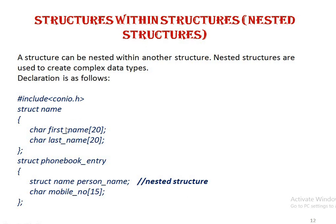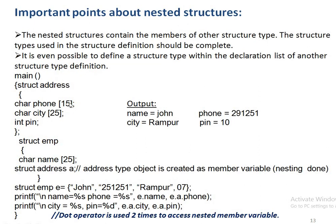Structure within structure is called nesting. One structure 'name' is created with two member variables. Then another structure 'phone_book_entry' has a member variable which is an object of the 'name' structure. Since the name structure is already defined earlier, any object of phone_book_entry can hold three values: first name and last name through the 'person_name' object, plus its own mobile number.